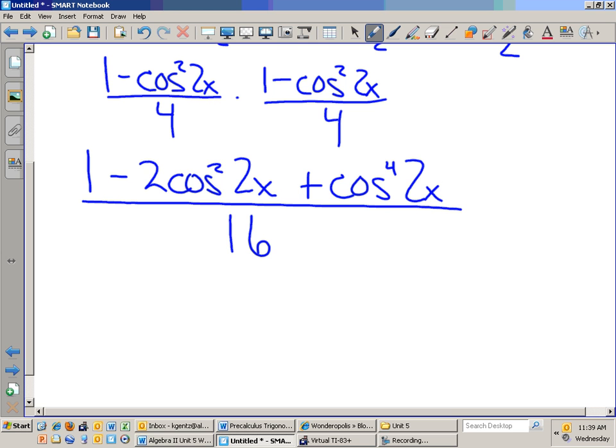1 minus 2 cosine squared of 2x plus cosine to the fourth of 2x all over 16. So, from here, you have to continue the substitution, right? From here, you have to continue to substitute, like we did in the previous one, for here, and here. You're going to come up with two or three more substitutions. Yeah. It is a lot of work. This problem should take up about close to, you know, a whole page.